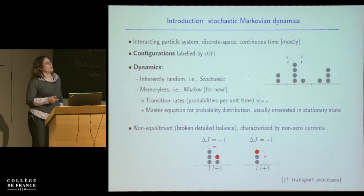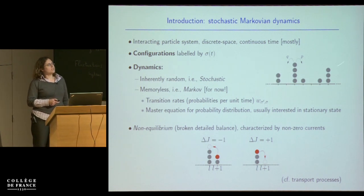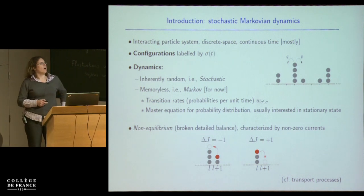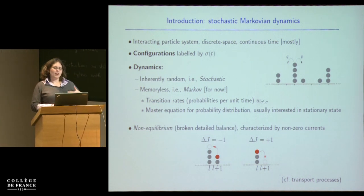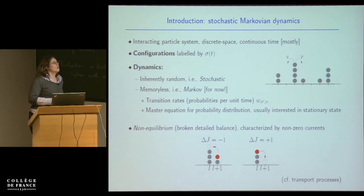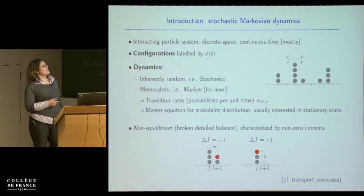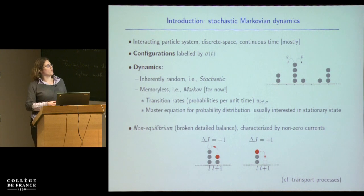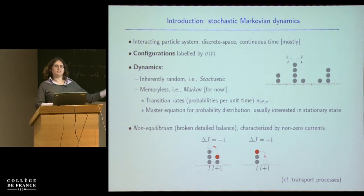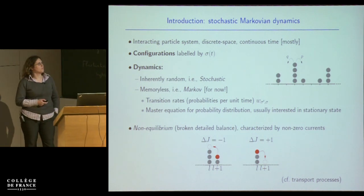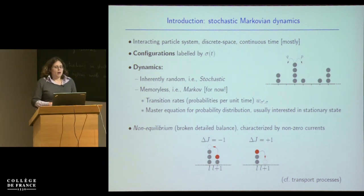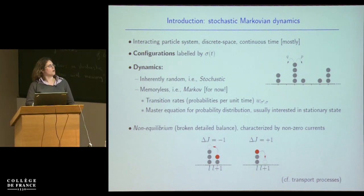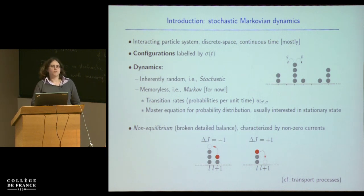To describe what the system looks like at any moment, I need to know the state space and where the particles are. I'll call the positions of the particles at a given time a configuration, labelled sigma_t — just a snapshot of where the particles are at some time t. On top of that I have dynamics telling you how those particles move. We assume it's inherently stochastic and, for now, memoryless — so what happens in the future depends on where the particles are now but not on where they were in the past. That's the Markovian approximation.